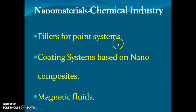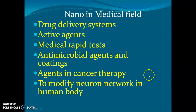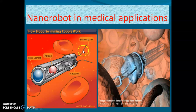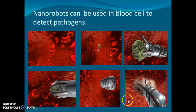In the chemical industry, nanotechnology is used for filtration systems, coating systems based on nanocomposites, and magnetic fluids. For example, nano-coated paints on cars reflect heat and prevent it from entering the vehicle on sunny days. In medicine, nanotechnology is vital for drug delivery, active agents, medical rapid tests, antibacterial agents, cancer therapy, and modifying neuron networks. Nano robots are injected to deliver drugs directly to cancer cells, destroying and removing them.